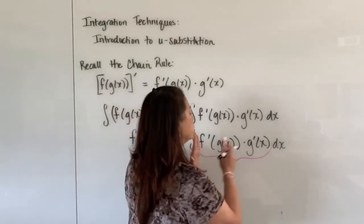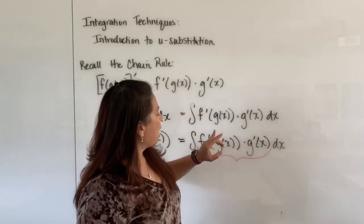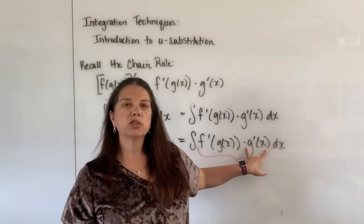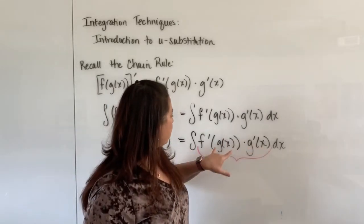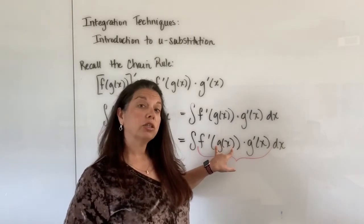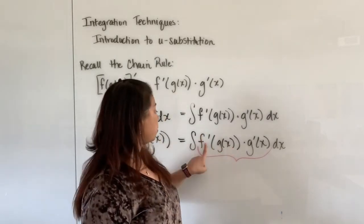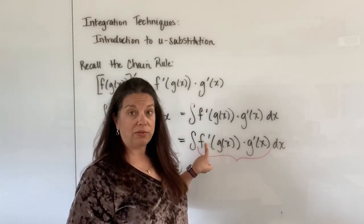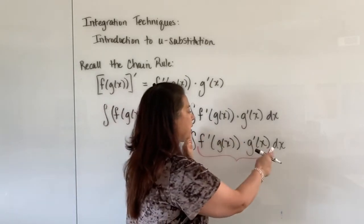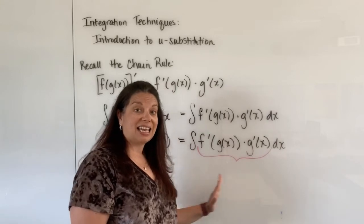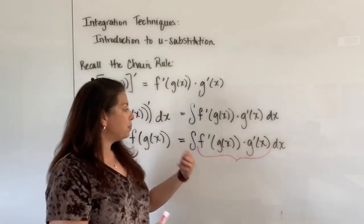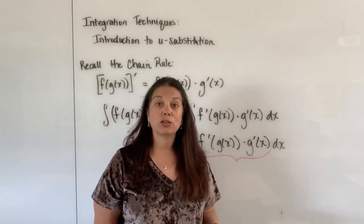And the integrand will be set up in the way where I have somebody's derivative, g of x's derivative, that g of x as a function sits as an inside function, as an input into another function's derivative. And so what's going to happen in the future videos is we're going to be able to see an integrand set up much in this way, and be able to use a technique called u substitution.